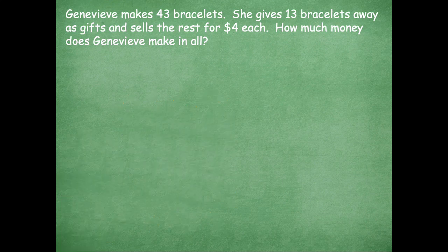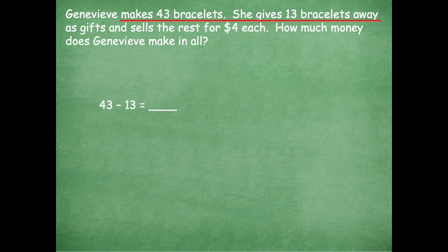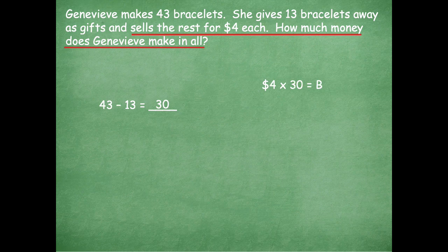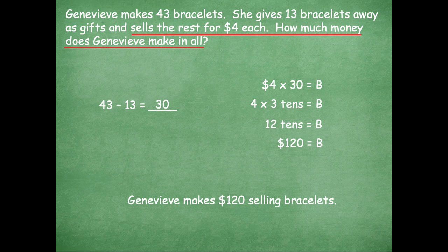All right, friends, make sure to pause if you need more time. Otherwise, here we go. She made 43 bracelets but gives away 13 of them. Step one: I have to find out how many she has left. So 43 minus 13 equals 30 — she has 30 bracelets left. She sells the rest for $4 each, so now I need to find out how much money she makes. So $4 times 30 equals B for bracelets. I do 4 times 3 tens: 4 times 3 is 12, so that's 12 tens. I know 10 tens equal 100 and then two tens left over is 20, so it's 120. Genevieve makes $120 selling bracelets.